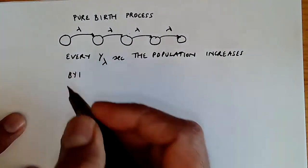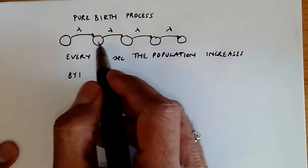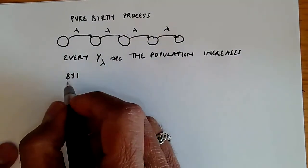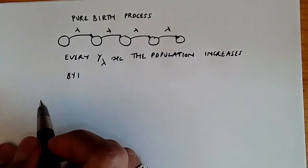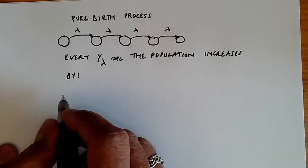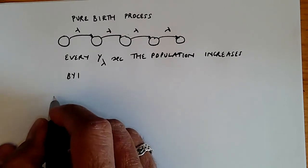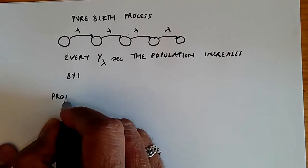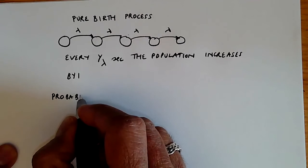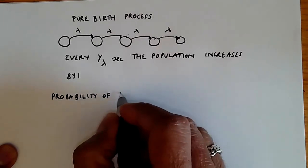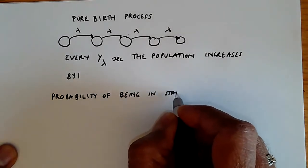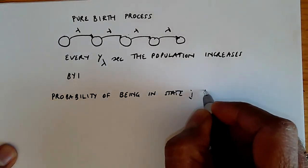This is not an ergodic process because we don't have any communication back from the other states to the first state, but nevertheless we can still study it because we don't need ergodicity for some of the properties. So we want to study the probability of being in state j at time t.